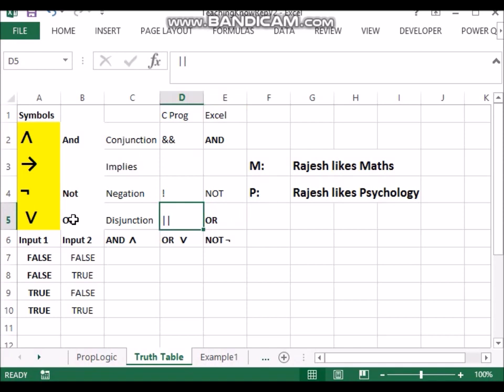In C programming, on the other hand, you have a symbol with two pipes and two ampersand in the case of and and two pipe symbols in the case of or.